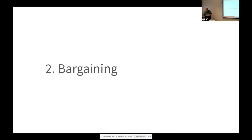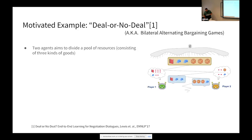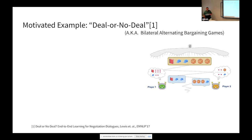Now I'll talk a little bit about bargaining — we're not going to go into much detail, but we'll be motivated by this one example. I'm going to call it Deal or No Deal, but it's been called about 17 different things. It's really a bilateral alternating bargaining game. The agents start with a pool of items that appear, and the agents have preferences — the green agent really likes books, for example, and the orange agent likes basketballs.